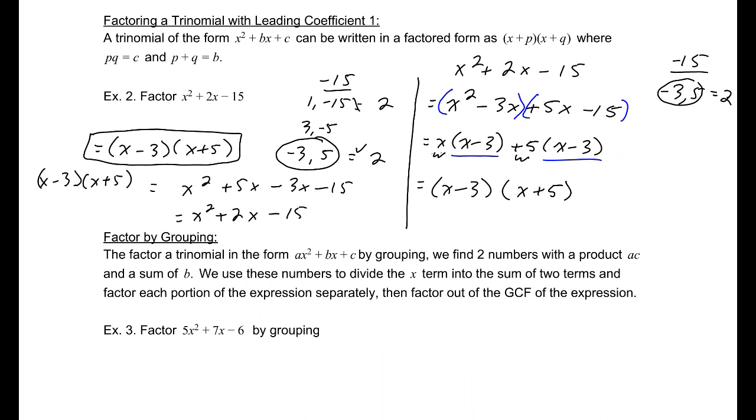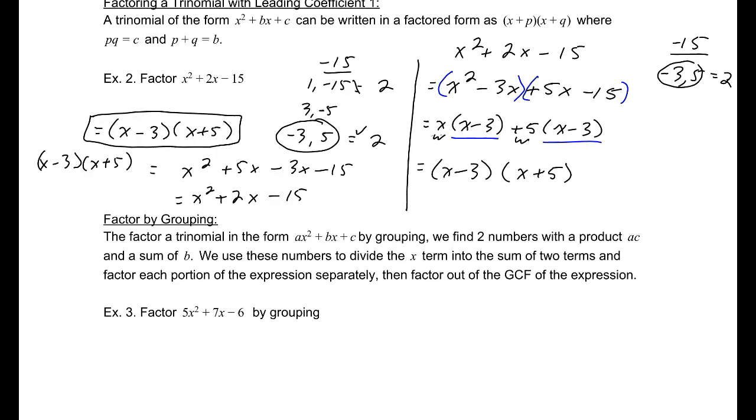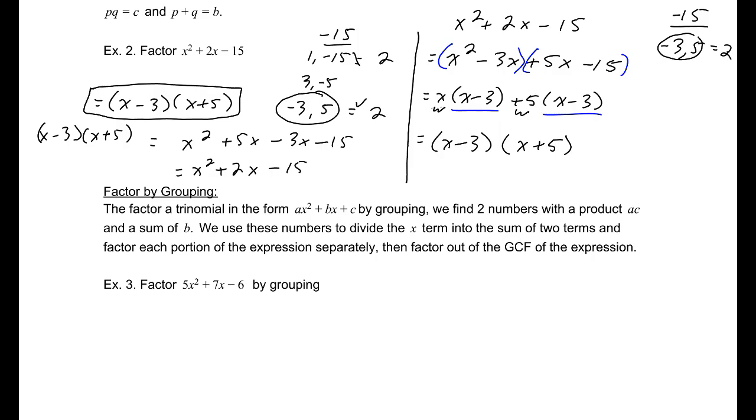So here we go, we have (x + 5). So I have the same answer here. Two different ways to do it. They're about the same amount of work, except that the second factoring session here works always, no matter what the leading coefficient is.